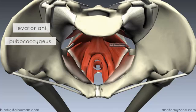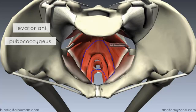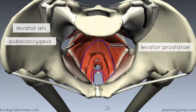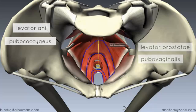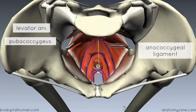You've got the pubococcygeus, which attaches from the bony part of the pubis and extends back to the coccyx. The anterior fibers of the pubococcygeus loop around the prostate in males — forming the levator prostatae or puboprostaticus — and in females they loop around the vagina, forming the pubovaginalis. In the midline, connecting from the coccyx down to the anus, you've got this midline raphe, called the anococcygeal ligament or anococcygeal body.